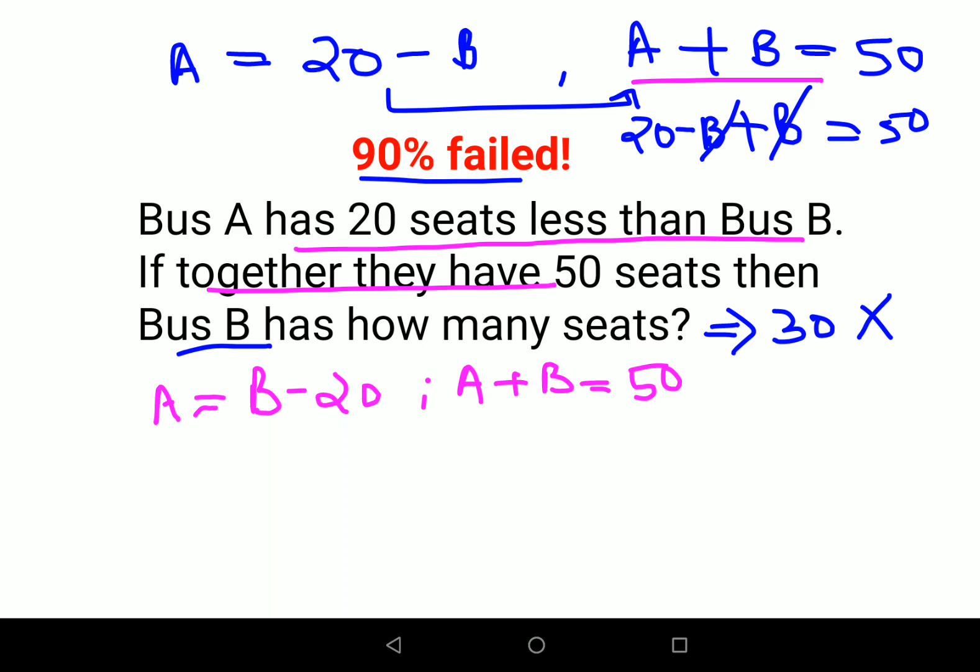And instead of A, we will put B minus 20 plus B equals 50. So now when you shift the 20 on the other side and B plus B comes here as 2B equals 70.